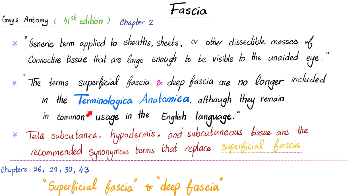Yet the same book, in chapters 26, 29, 30, 43, and others, will talk about superficial fascia and deep fascia as if they did not say this in chapter 2. The late Dr. Henry Grey, the author of Grey's Anatomy, is probably rolling in his grave right now. Can someone tell me how this specific change in terminology is helping anybody? Is it helping patients, doctors, surgeons, nurses, or anyone?